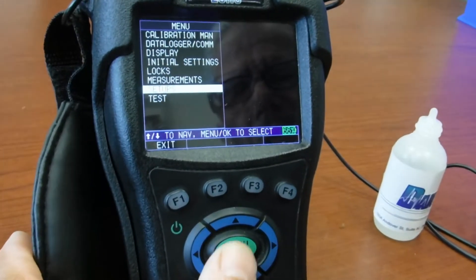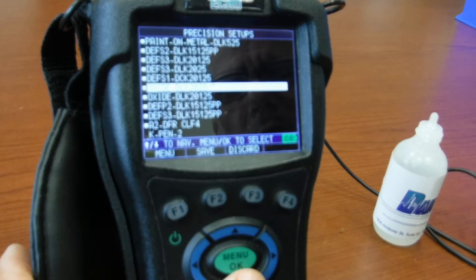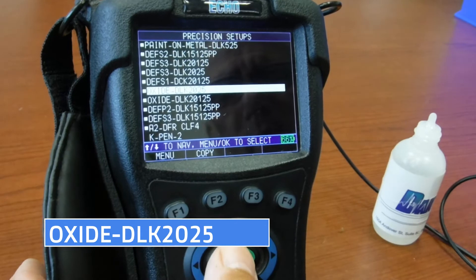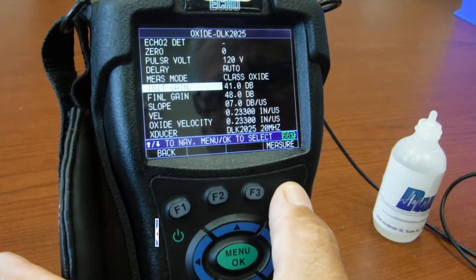Go to the menu OK, press setup, scroll to where it says oxide, DLK 225, press menu OK and press the F4 measure key.